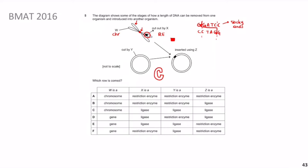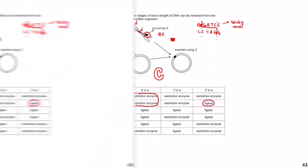Going through the answer options: W is a chromosome, narrowing it to A through C. X is a restriction enzyme. Now between A and B, Z is either restriction enzyme or ligase — and since the gene is inserted into the plasmid via DNA ligase (completing the sugar phosphate backbone), Z must be ligase. Therefore the answer is B.